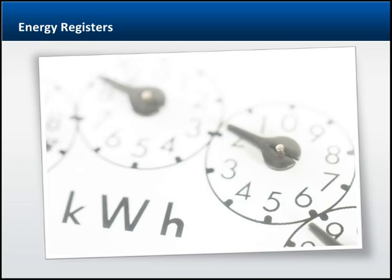The energy register is the part of the meter that displays energy usage in kilowatt hours. There are three different types of registers in use. The pointer type of register uses a moving pointer on a dial to display usage. The meter reader reads the register each billing cycle, and usage is determined by subtracting the current value indicated from the value displayed the last time the meter was read.